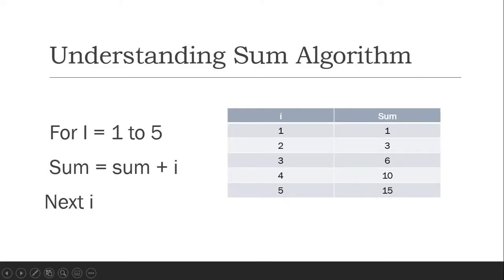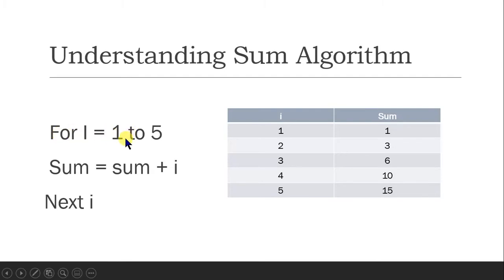When we talk about sum, let's look into the steps. For i equals 1 to 5, sum is equal to sum plus i, next i. We need to understand the concept of sum equals sum plus i. In the beginning we write sum equals 0 because the total starts with 0. For i equals 1 to 5, every time i changes — i becomes 1 the first time, and sum equals sum plus i. The current value of sum, add i into it, then save into sum. So it will be 0 plus 1, sum will become 1. Next i, sum will be 2.